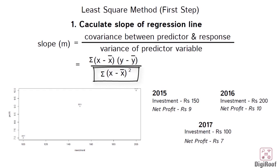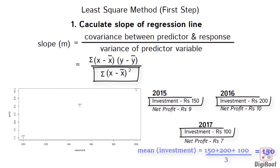We already know from a previous video the method to calculate variance. Since we are calculating variance of the predictor variable we would subtract each value of investment with its mean. We will then square each of the individual differences and add them up to get the variance of the predictor variable.